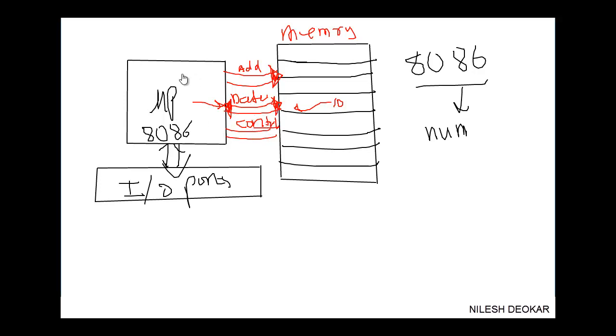Now control bus. Always MUP sends control to memory, so the direction of the control bus will be like this. So this is the basic block diagram of MUP and its peripherals.